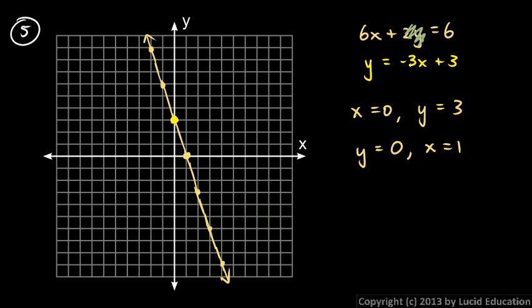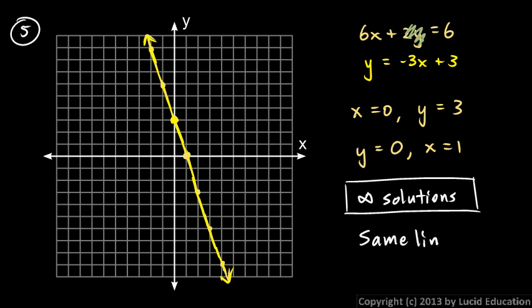And look, a slope of negative 3, that's this line exactly. So, these two equations are actually the same line. So, there are infinity solutions here, an infinite number of solutions. And the reason there are an infinite number of solutions is that those two equations are, in fact, the same line.